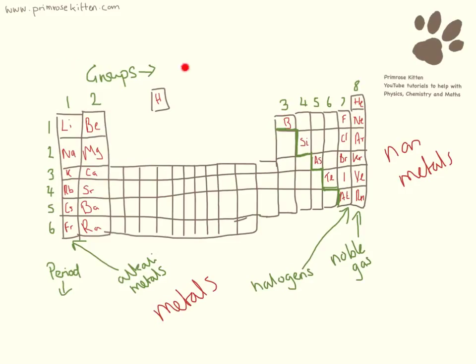As we go across here, you'll see some numbers: one, two, three, four, five, six, seven, eight. Sometimes eight is written as zero. These are the groups, and the groups go down.